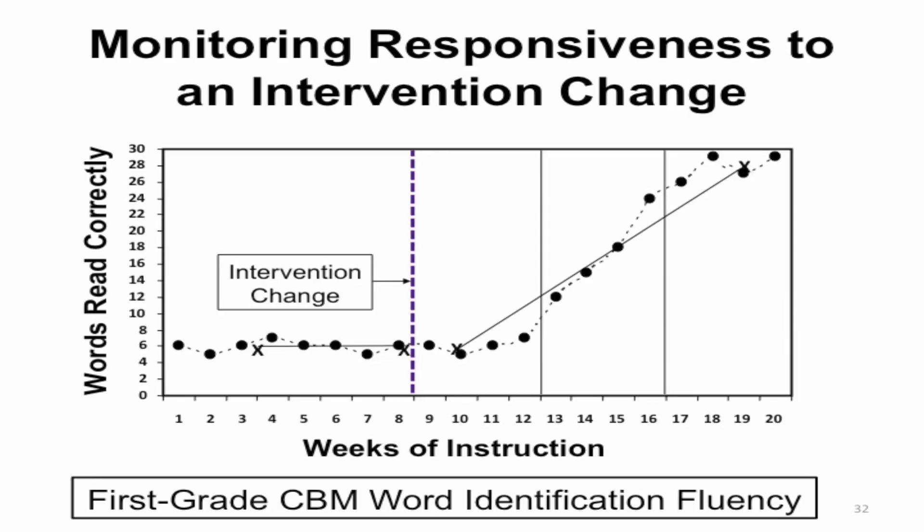In contrast, in this graph we see the student was not originally making progress, but after an intervention change indicated by the dashed line between weeks 8 and 9, the student is making progress. This scatterplot graph also has words read correctly on the y-axis increasing from 0 to 30, and weeks of instruction on the x-axis ranging from 1 to 20. Once the intervention change began between weeks 8 and 9, the student's progress is evident by their increase in words read correctly each week. This suggests that with the support of an evidence-based intervention, the student is able to make progress toward their goal of reading fluently and would likely not be eligible for Bookshare, as they were able to make substantial progress when provided with additional support.